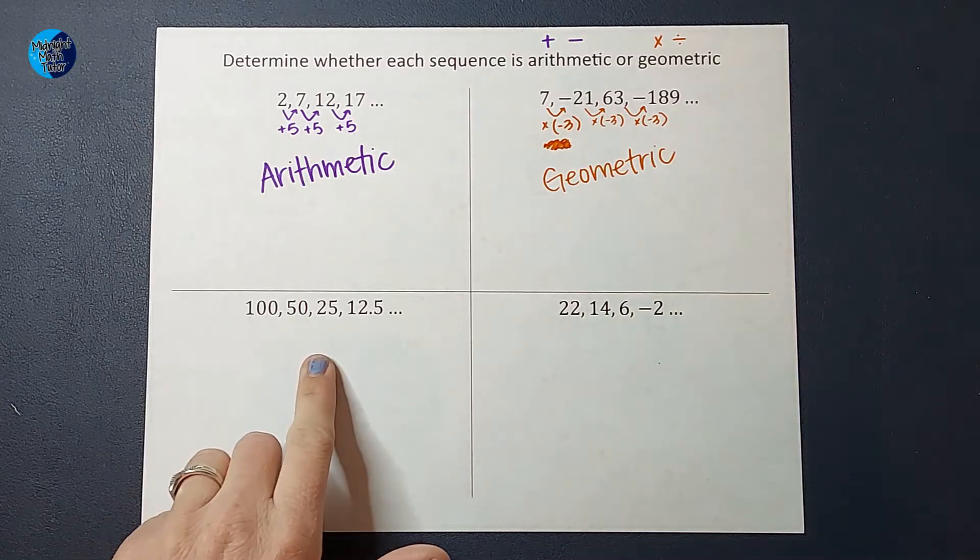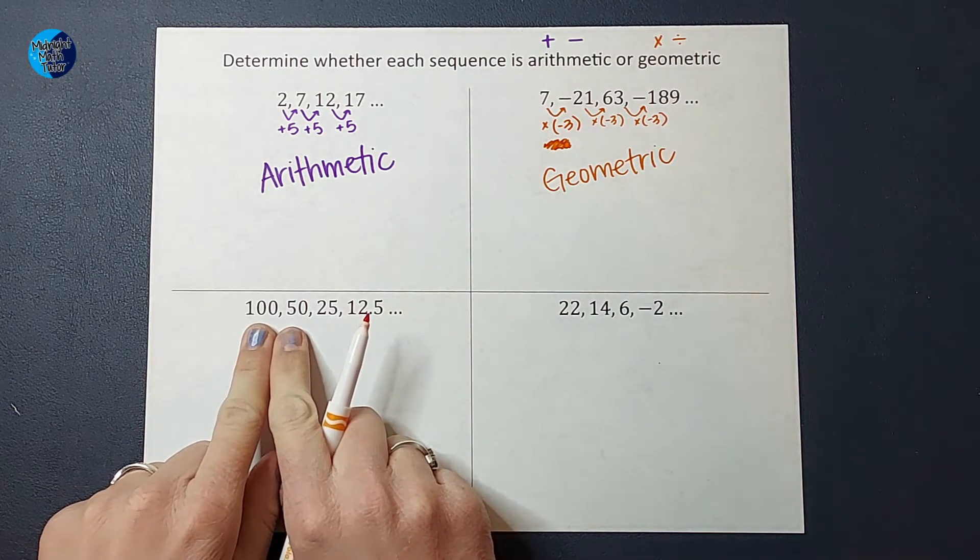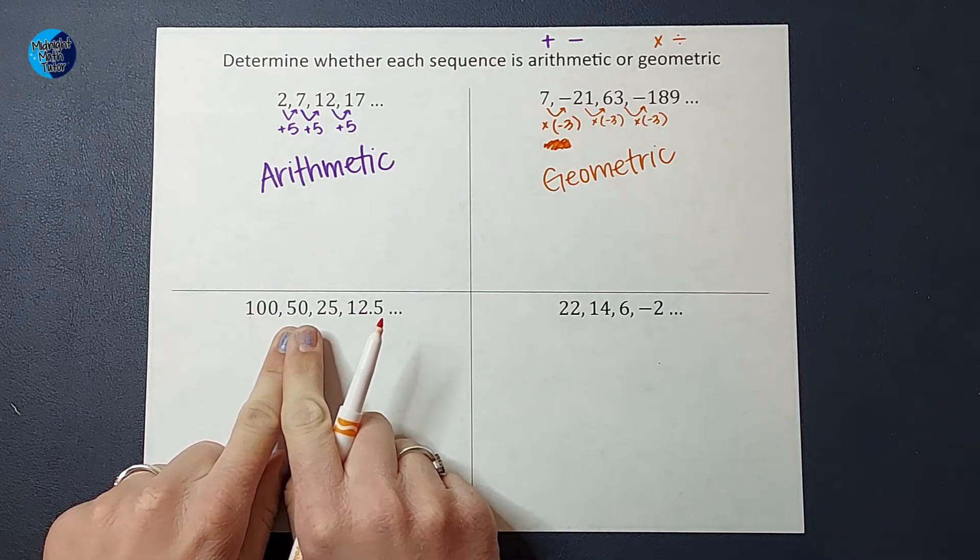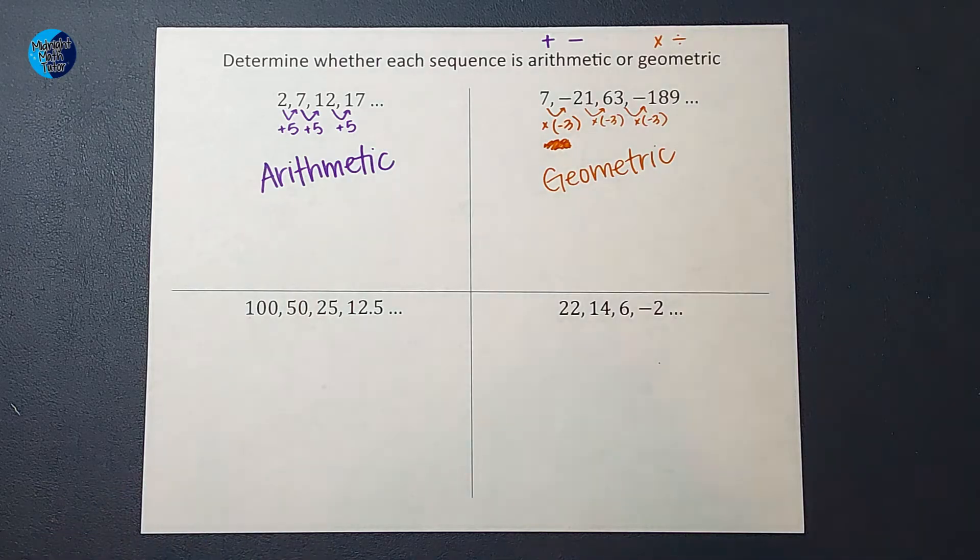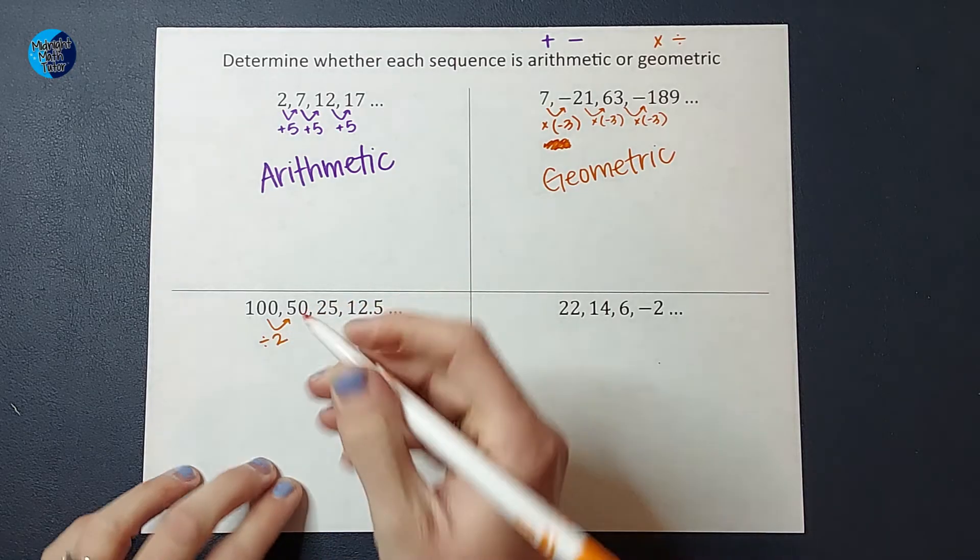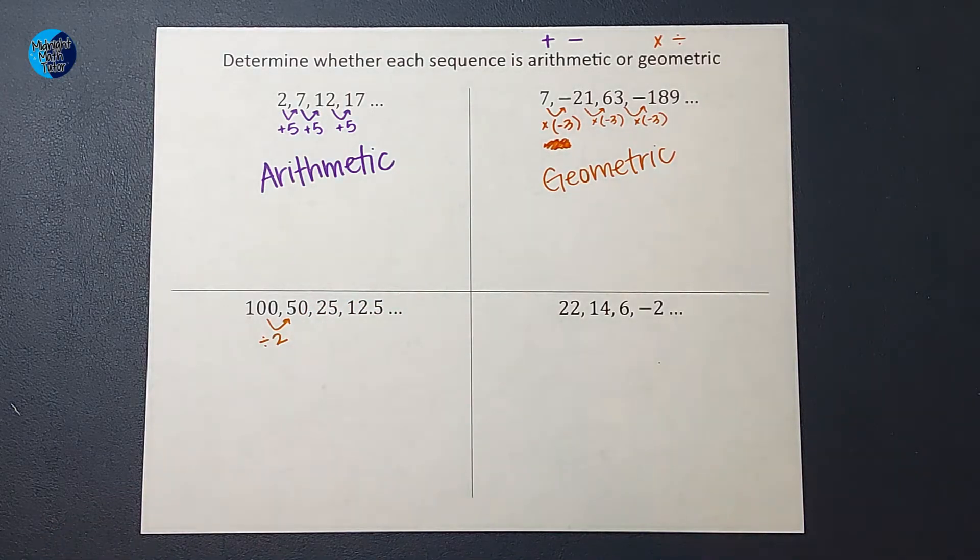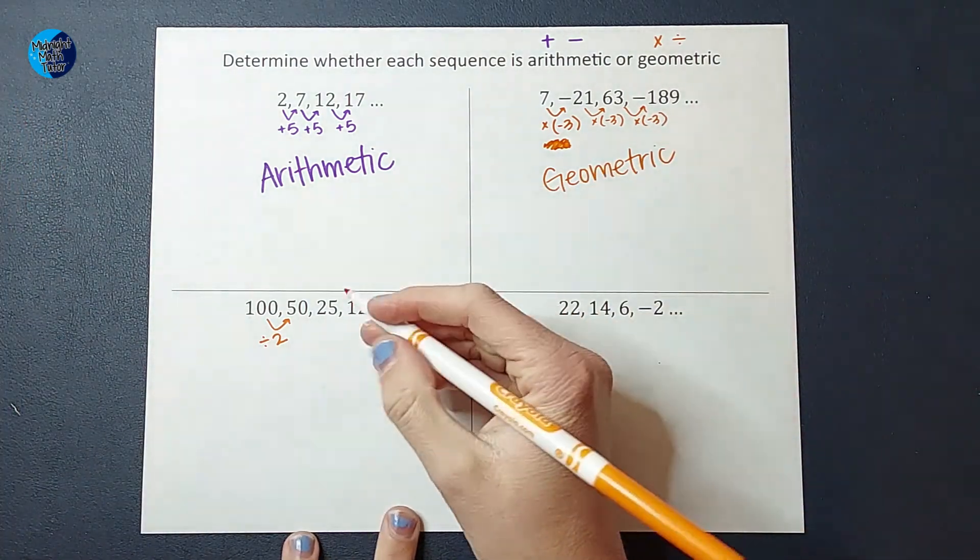All right, let's go ahead and look at this guy. This is another one where I could say, oh, I'm subtracting 50, right? But 50 minus 50 is not 25. So I'm not subtracting 50 each time. What I am doing is dividing by two. Or another way you could think of that is multiplying by one half. Either way, you get the same thing.